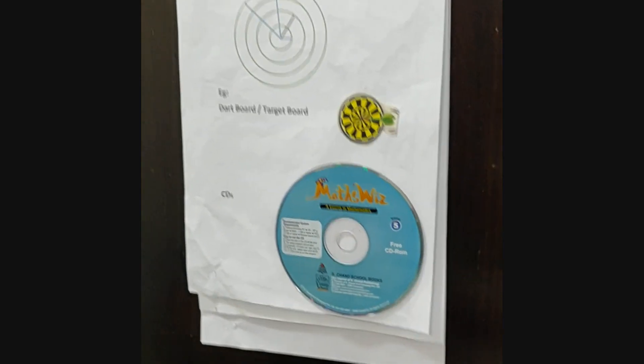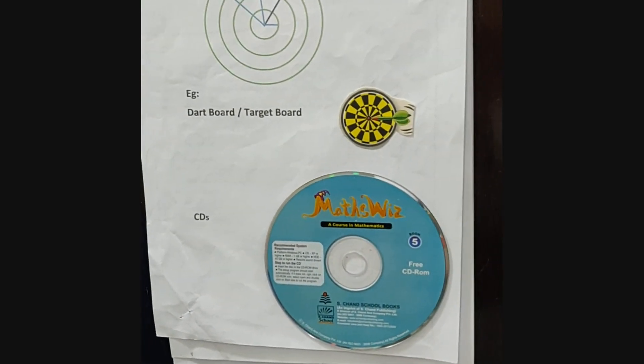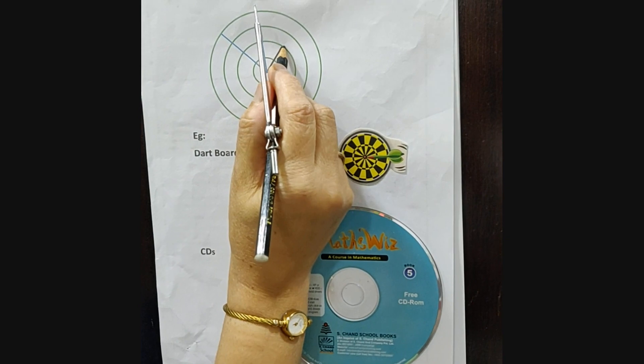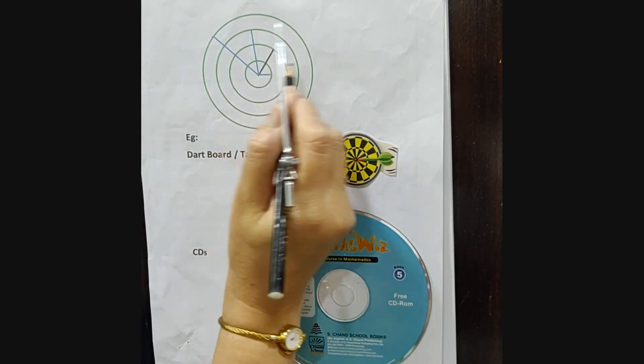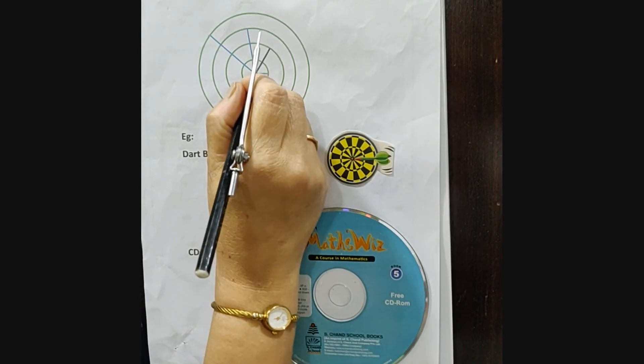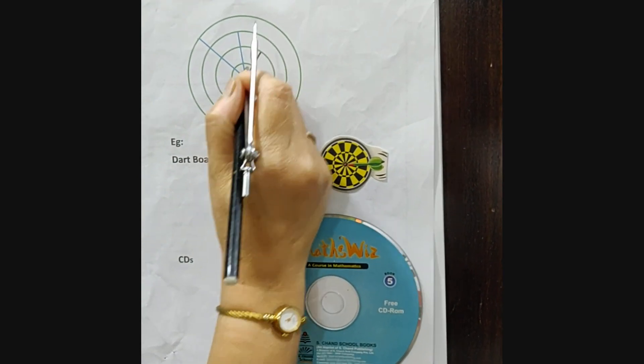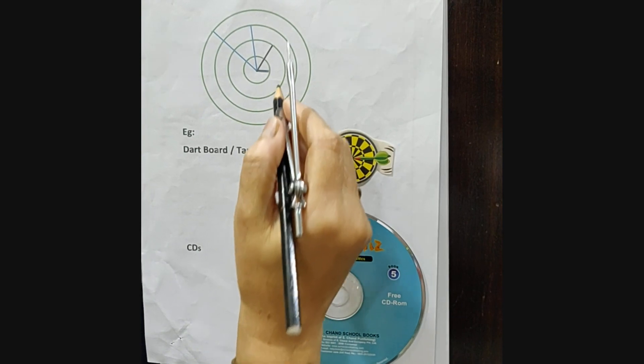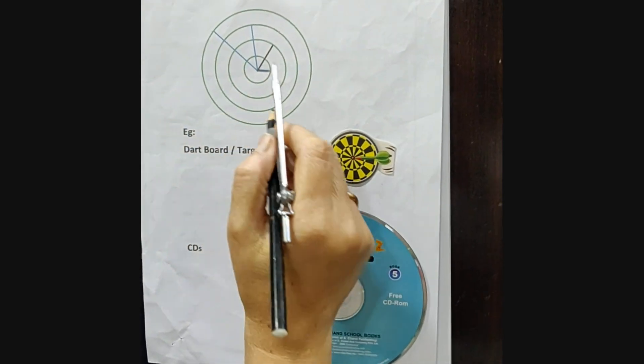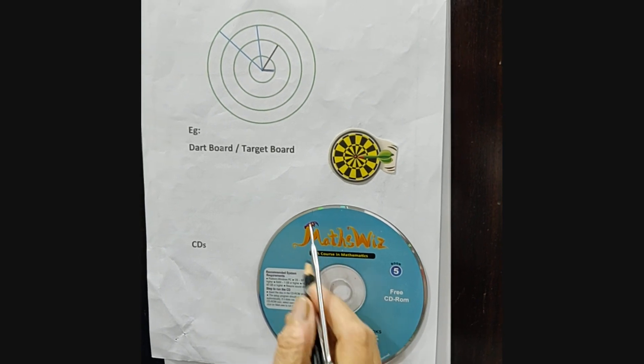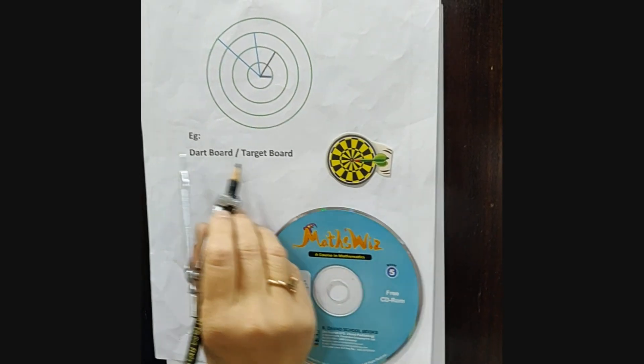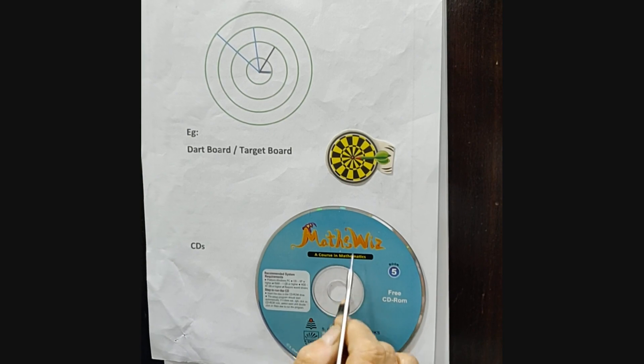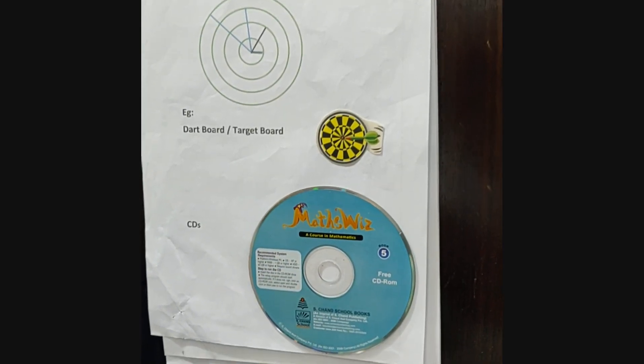Next comes concentric circles. When there is only one center and different radii, we get concentric circles. This circle has the smallest radius, then increasing, increasing, and increasing. Every circle has different radius. Examples of concentric circles are dartboard or target board, and CDs. You can see outer circle, then middle, then inner.